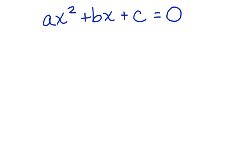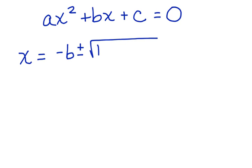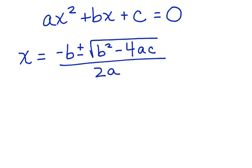Now here's the quadratic formula. You can solve for x by using negative b plus or minus the square root of b squared minus 4ac, all divided by 2a. If you substitute the values of a, b, and c into this formula and solve it, you'll find the value of x.